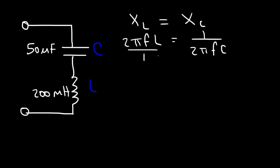If we cross multiply, we're gonna have 1 times 1 which is 1, and then 2π times 2π is 4π². f times f is f², and then we have LC.